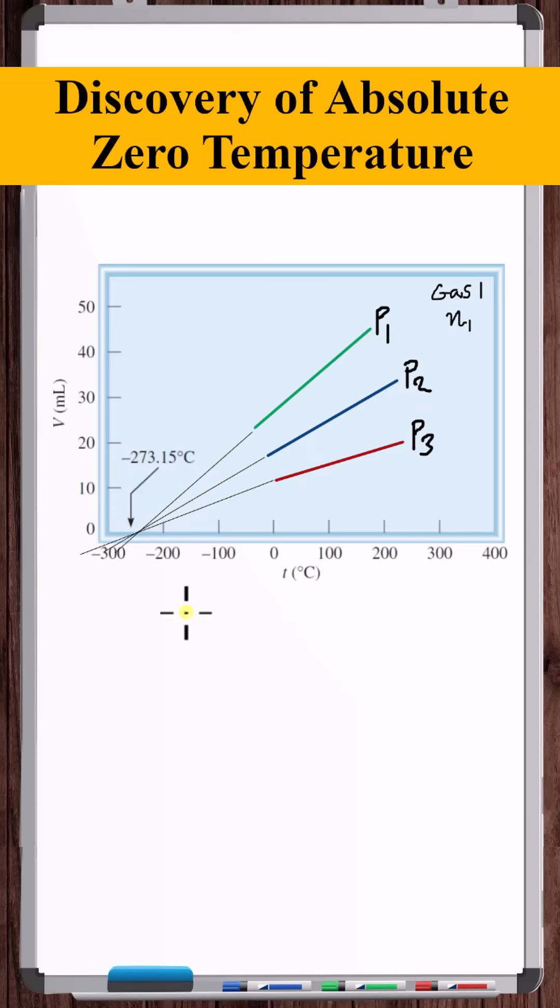So it was decided that this must be absolute zero. Temperatures cannot be any lower than this. Absolute temperature scales like the Kelvin scale and the Rankin scale are zero at this point.